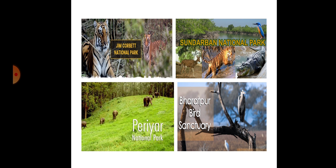We have many wildlife sanctuaries and national parks. Some of them are: Jim Corbett National Park in Uttarakhand, Sundarban National Park in West Bengal, Periyar National Park in Kerala, and Bharatpur Bird Sanctuary in Rajasthan. Thank you, children.